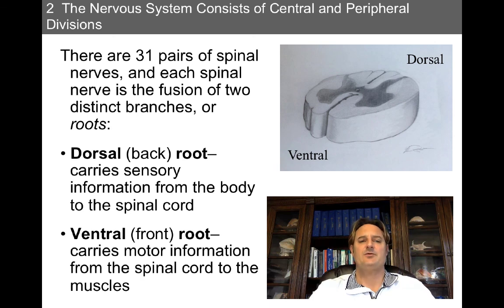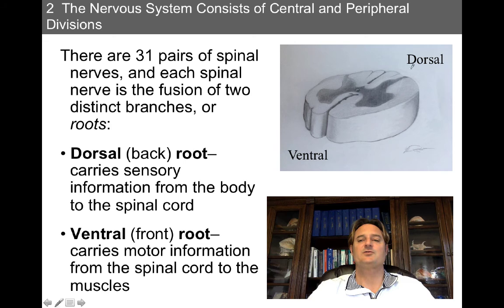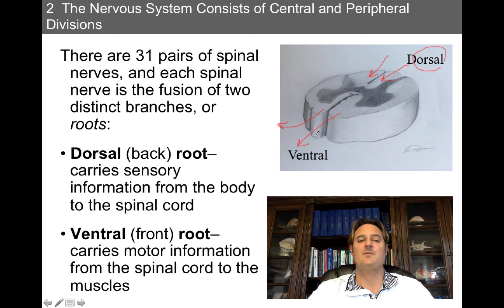There are 31 pairs of spinal nerves, and each spinal nerve is the fusion of two distinct branches or roots: the dorsal root and the ventral root. The dorsal root is in the back — that's where incoming sensory information arrives at the spinal cord. The ventral root is in the front — that's where motor information is directed out of the spinal cord. So the dorsal root carries sensory information from the body to the spinal cord, whereas the ventral root carries motor information from the spinal cord to the muscles.